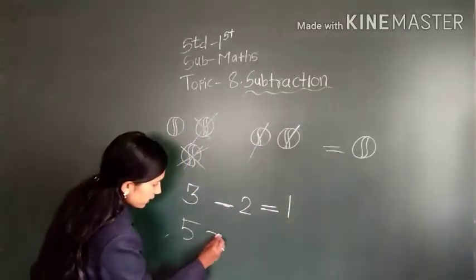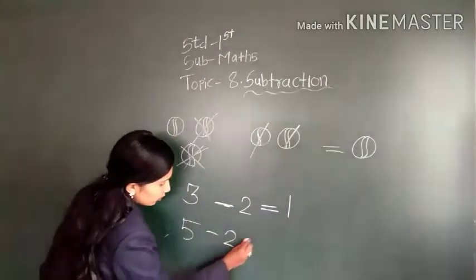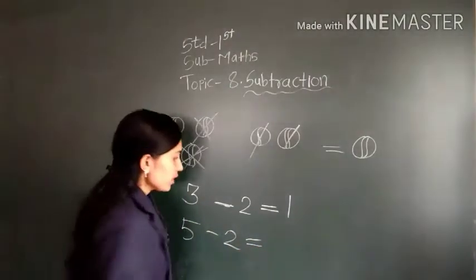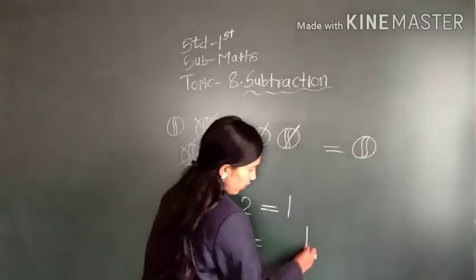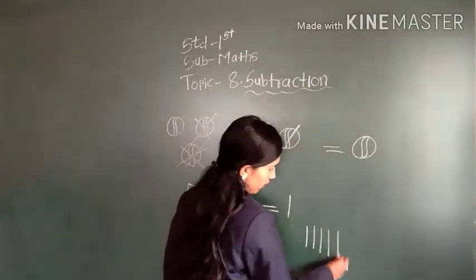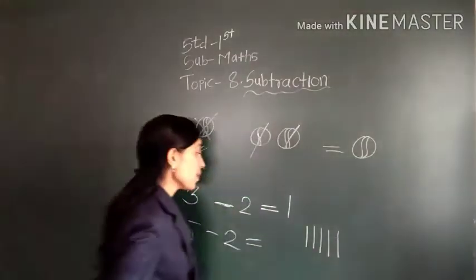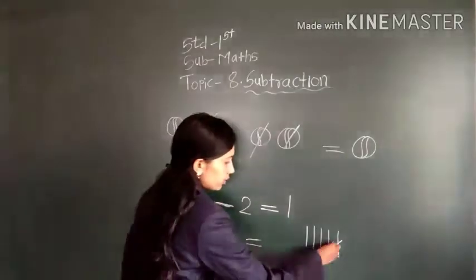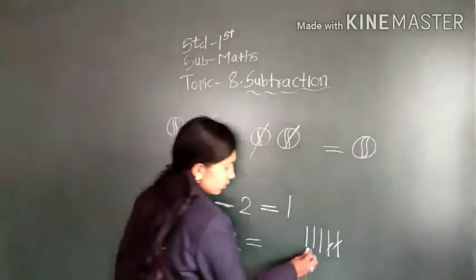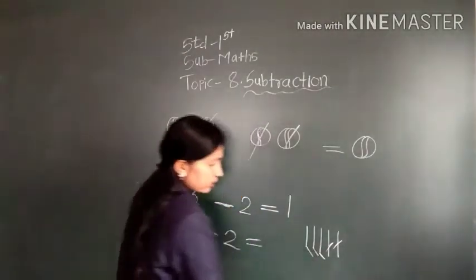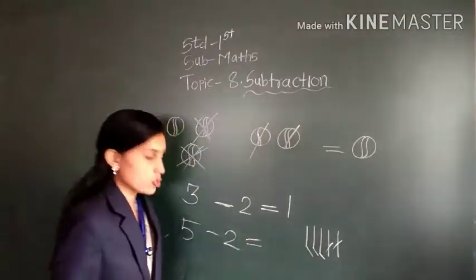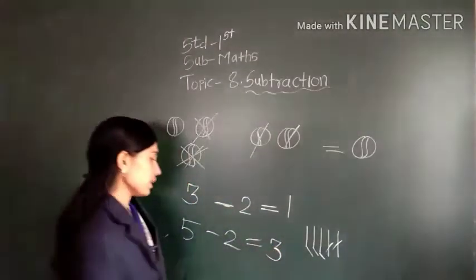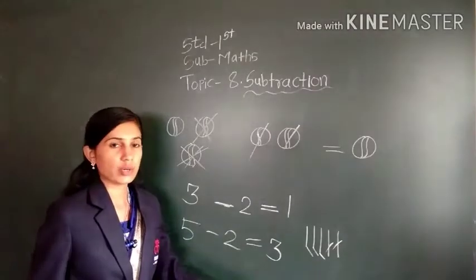Now, five minus two. Five means two subtracted. We have to draw here five lines: one, two, three, four, five lines. Five means two subtracted — one, two. Now count the remaining: one, two, three. Three lines are left. So five minus two is three.